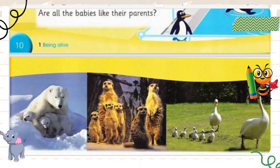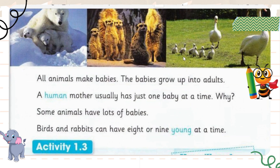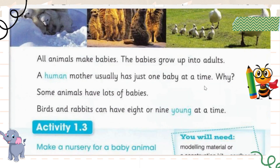Moving on, we have polar bears and baby polar bears, and again the big ducks and small ducks. All animals make babies and the babies grow up into adults. There are three stages: one is baby, when you are born; then young, when you are not a baby anymore but not yet an adult — slightly bigger than a baby; and then you transform into an adult, when you are big enough to produce babies yourself.